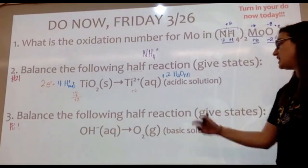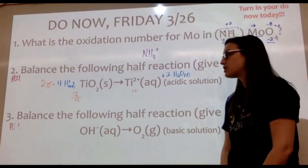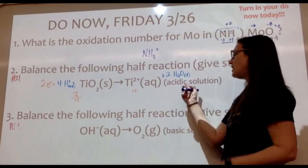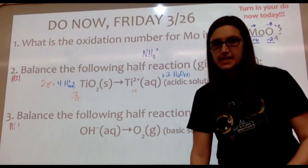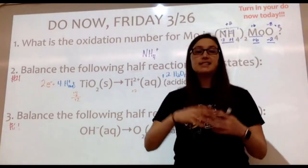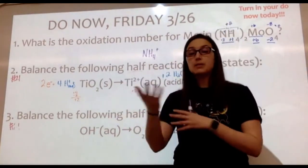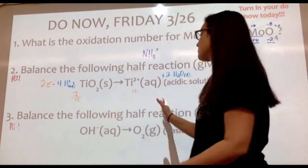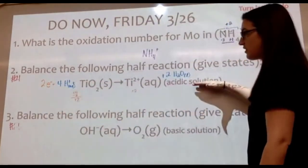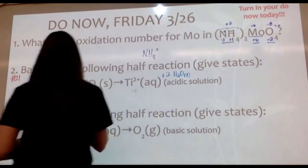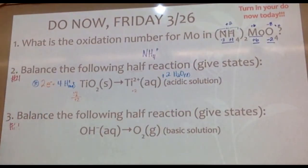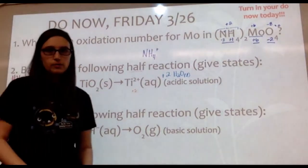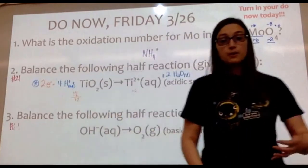Since this is only a half reaction, we don't need to cancel electrons with another half reaction. The problem says to give states of matter, so the final answer is: 2e− + 4H+(aq) + TiO2(s) → Ti2+(aq) + 2H2O(l). This is in acidic solution, which is confirmed by the presence of H+ — acids produce H+.